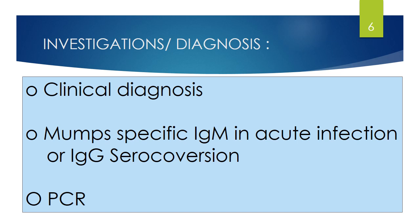PCR can also be done in the first week of infection. The virus can be cultured from urine, or detected by PCR after the first week of infection. PCR samples can be taken from urine, saliva, or CSF (cerebrospinal fluid). Other investigations may include a full blood count, which will show lymphocytosis, and a complement fixation test.